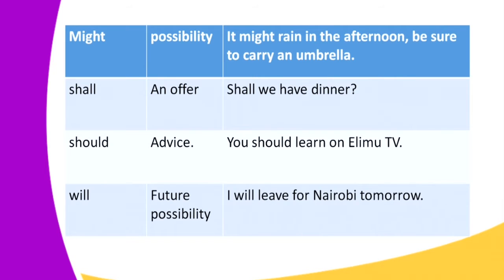We have the modal 'might' — it shows possibility. For example: 'It might rain in the afternoon, be sure to carry an umbrella.' We have 'shall' — it shows an offer. For example: 'Shall we have dinner?' or 'Shall you close the window?' Next we have 'should,' which in most cases shows advice. For example: 'I'll be advising you to learn on Elimu TV.' We have 'will,' which shows future possibility. For example: 'I will leave for Nairobi tomorrow.'